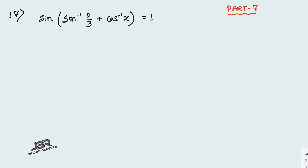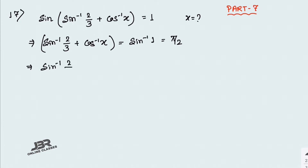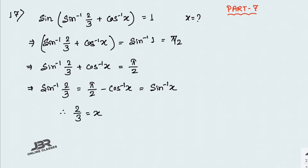First write down sin⁻¹(2/3) + cos⁻¹(x). Move the sine to the right-hand side, so it will be sin⁻¹(1), and sin⁻¹(1) means π/2. So sin⁻¹(2/3) + cos⁻¹(x) = π/2, which gives sin⁻¹(2/3) = π/2 − cos⁻¹(x). Since π/2 − cos⁻¹(x) = sin⁻¹(x), by comparing both sides, x = 2/3. That is your answer.